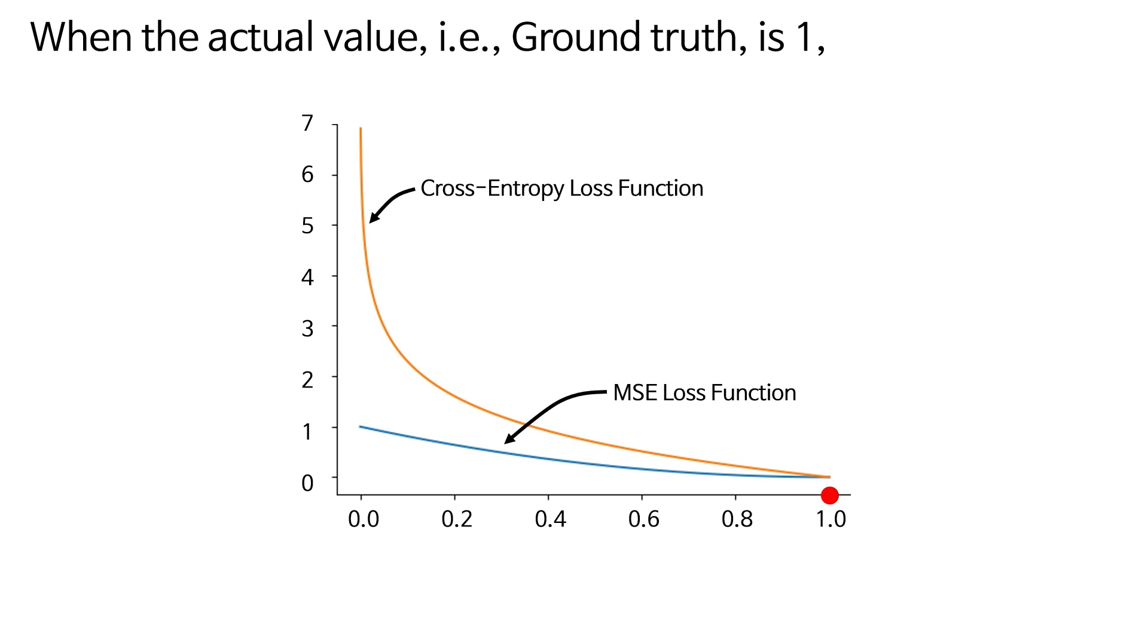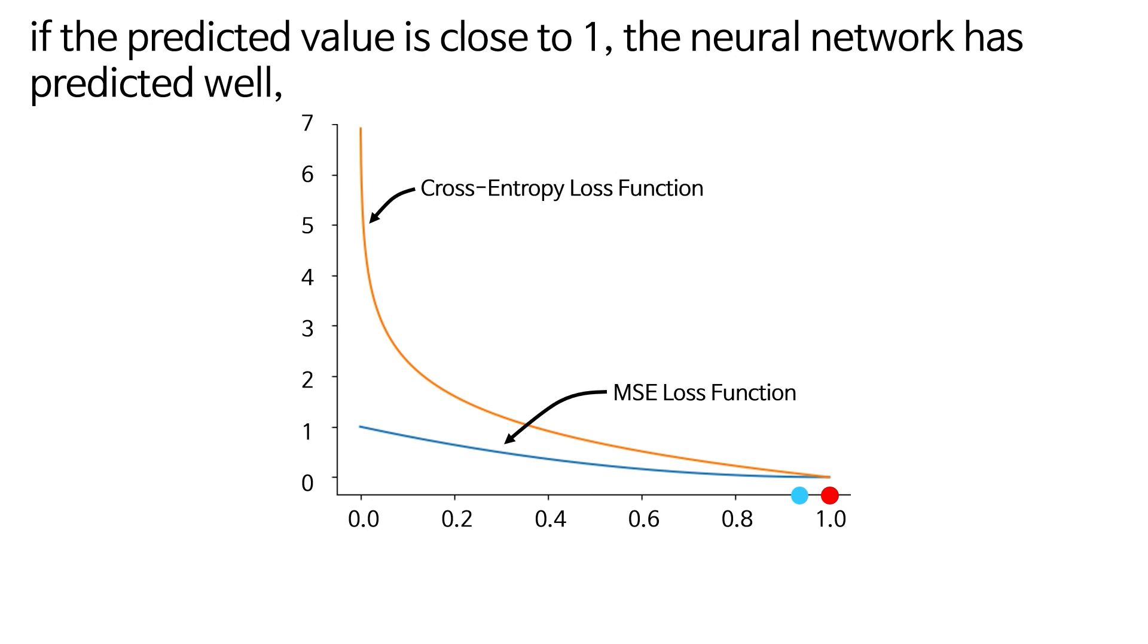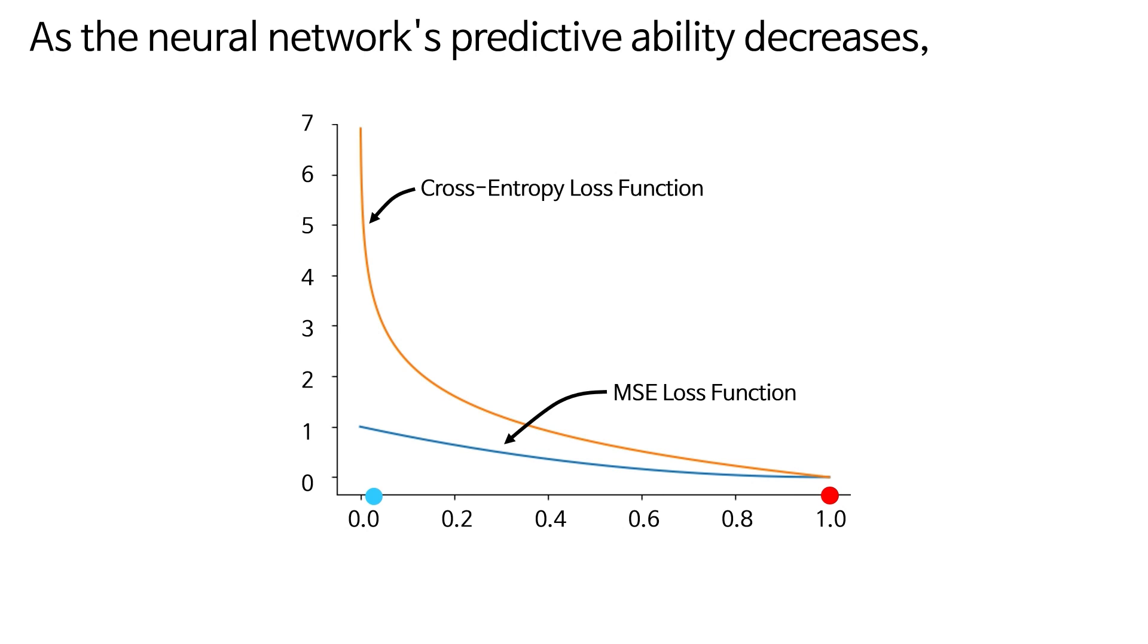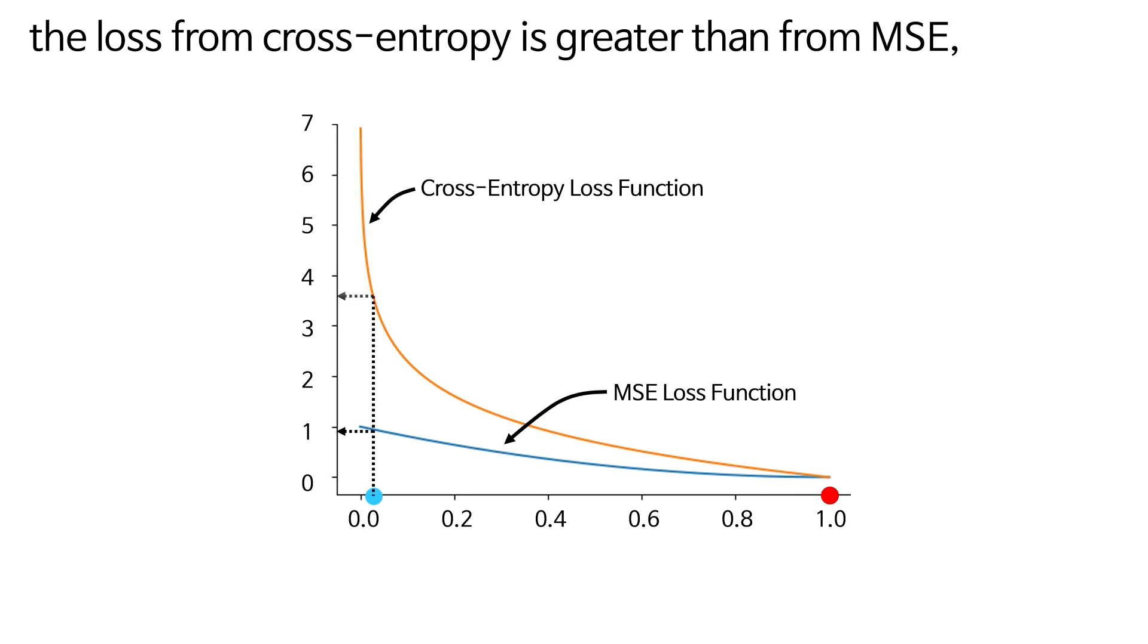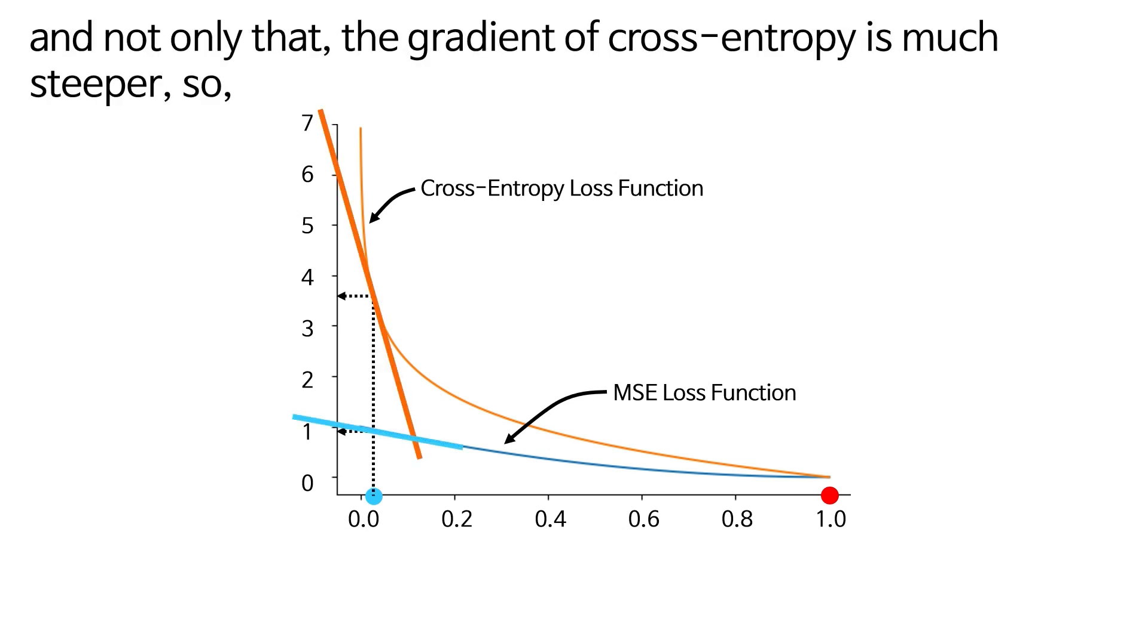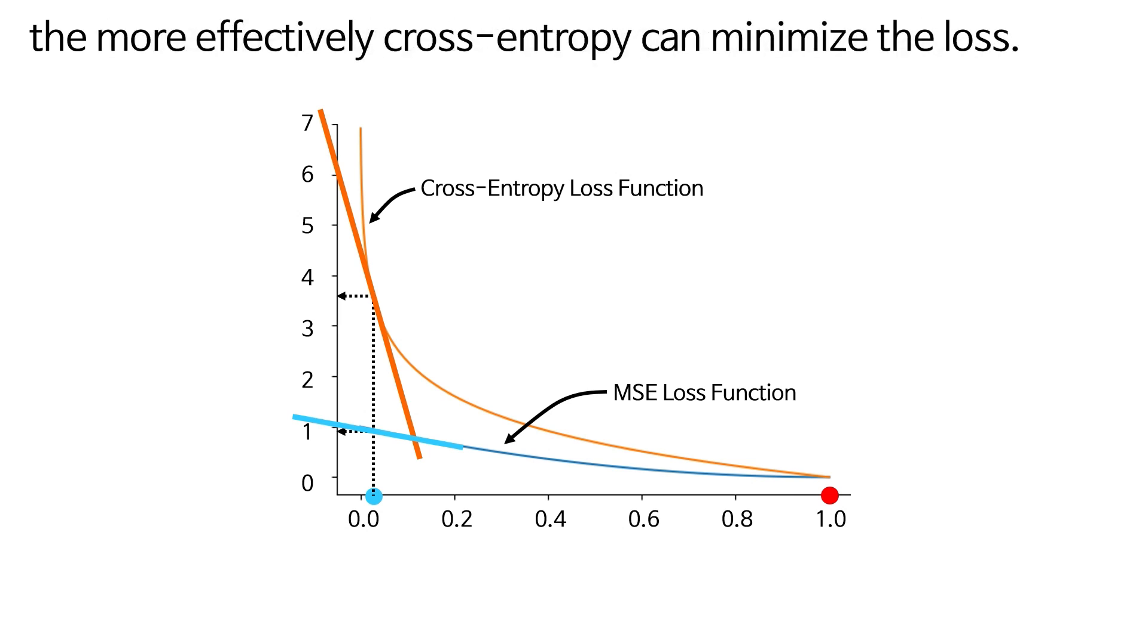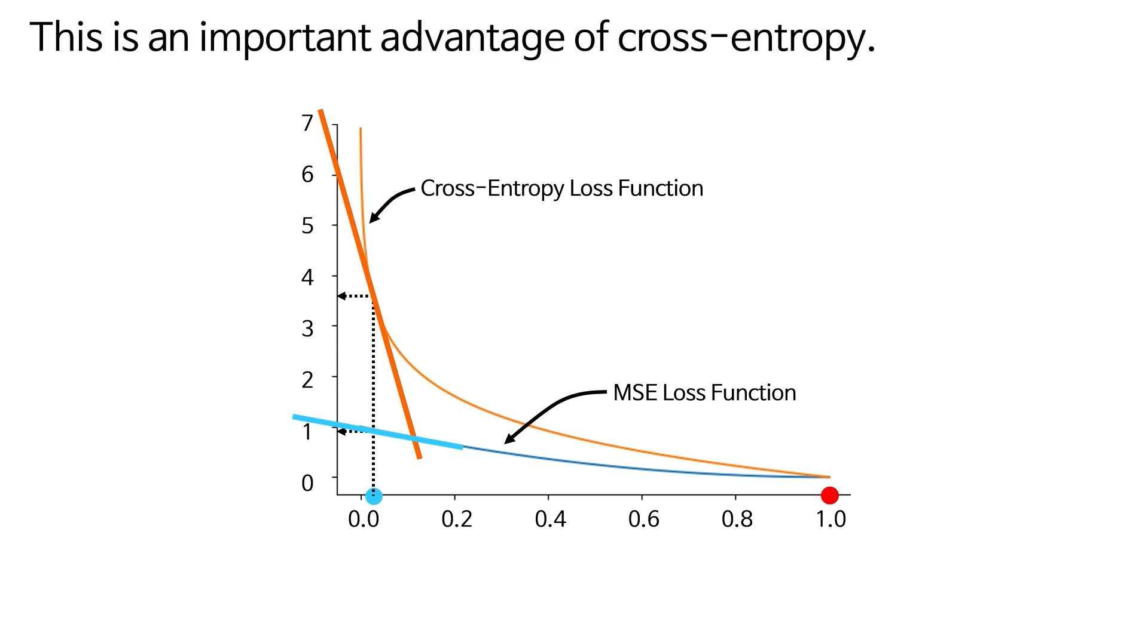if the predicted value is close to 1, the neural network has predicted well, and if the predicted value is close to 0, the neural network's predictive ability is considered poor. As the neural network's predictive ability decreases, the loss from cross-entropy is greater than from MSE, and not only that, the gradient of cross-entropy is much steeper. So, the farther the predicted value is from the actual value, the more effectively cross-entropy can minimize the loss. This is an important advantage of cross-entropy.